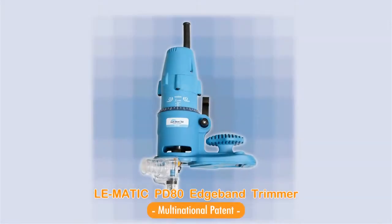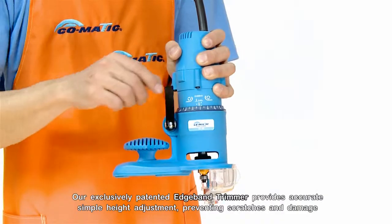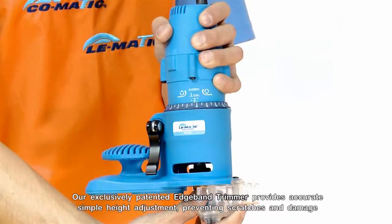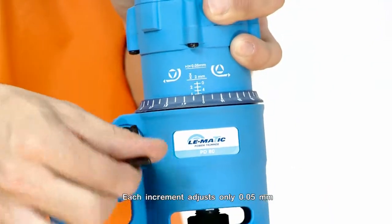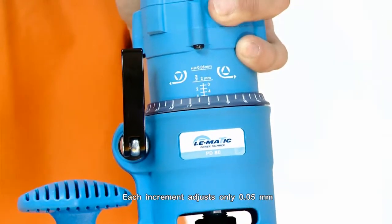The Lomatic PD-80 Edge Band Trimmer. Our exclusively patented edge band trimmer provides accurate, simple height adjustment, preventing scratches and damage. Each increment adjusts only 0.05mm.